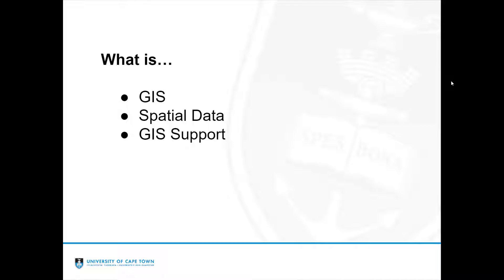I'm going to cover three basic topics: what is GIS, what is spatial data, and what GIS support involves. Then I'll talk about reference systems — a common term that differs slightly between libraries and geospatial analysts — and then I'll show a worked example to give you an idea of what a researcher might be doing. Afterwards we'll look at identifying the types of questions that might be GIS-related that you might receive in libraries.